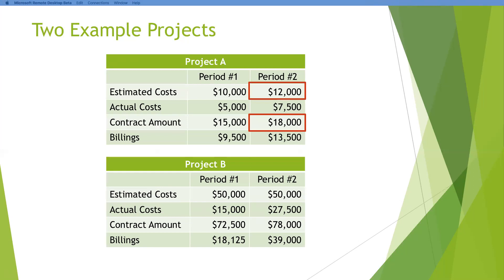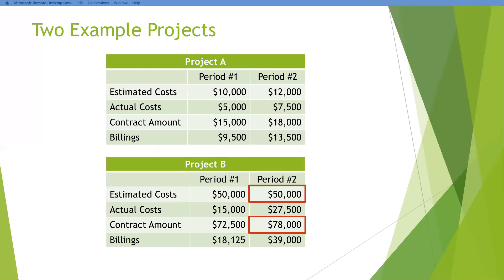One thing I wanted to point out — because we've been talking about how important change orders are — by the time month two rolled around, it looked like this contractor issued a change order, because the contract amount has gone up. And he did his job really well on the estimating side, because his estimated costs have gone up too. His budget has gone up for his costs. On project B, however, the contract has gone up but the estimated costs haven't gone up. So as an advisor, when you get these numbers at the end of the month and you're walking through this with your client, this is where you want to say: I think we've missed something here — we got this change order out to the client but we haven't updated our budget.